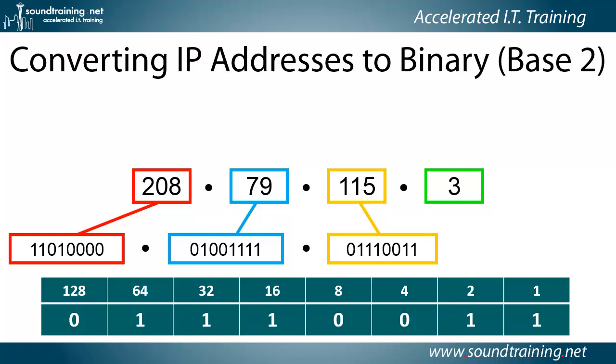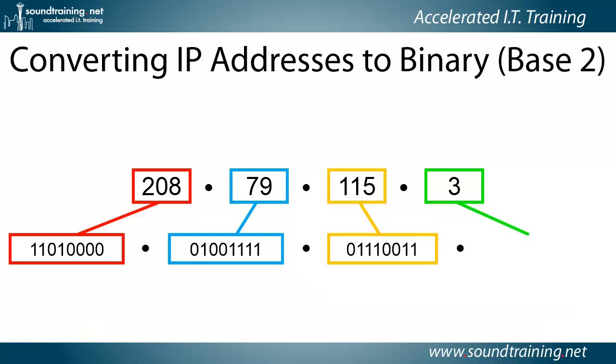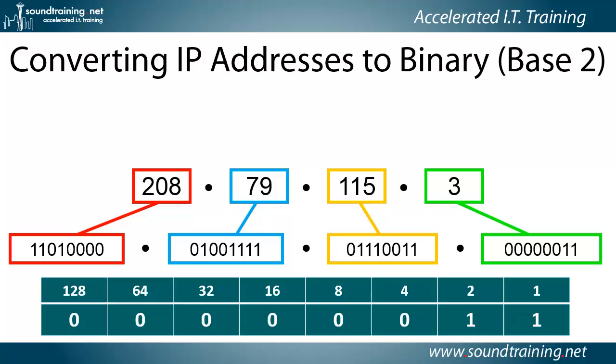By the way, we usually add them up from right to left. Now let's do the last one — this is pretty simple, you could probably do this one in your head. In this case the 1-bit and the 2-bit are turned on, therefore the byte value is a total of 3.